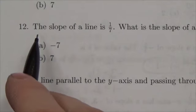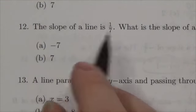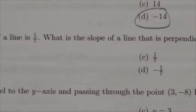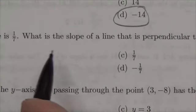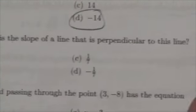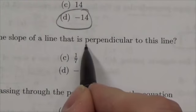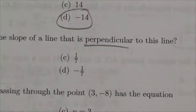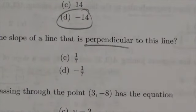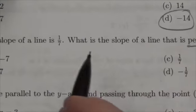Hi everyone. This question states that the slope of a line is 1/7th and it asks what is the slope of a line that is perpendicular to this? So this is just about the definition of perpendicular.